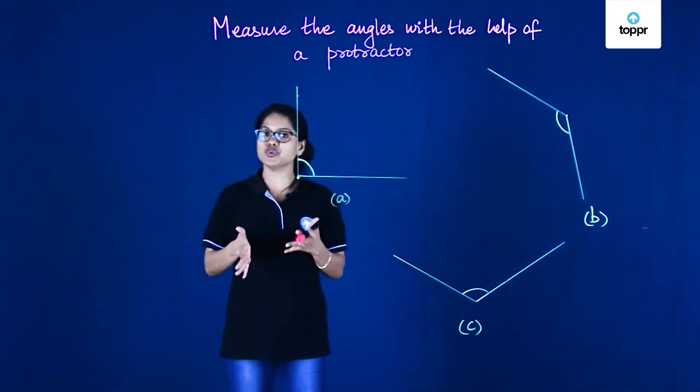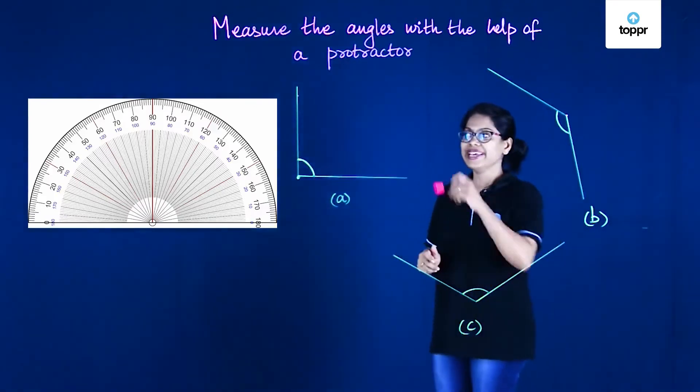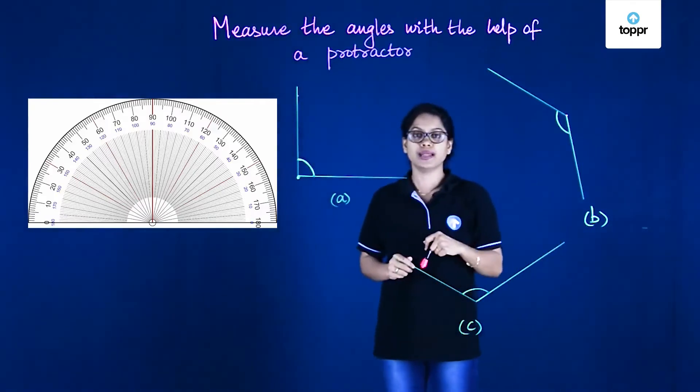A protractor is an instrument you can find easily in your geometry box. This is what a protractor looks like. It is in the shape of the English alphabet D.